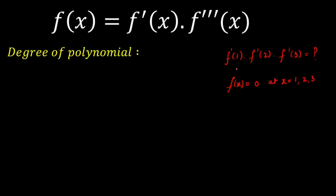Before calculating the product f'(1)·f'(2)·f'(3), I need to calculate the degree of the polynomial. Looking at f(x) = 0 at x = 1, 2, and 3, I can see the roots are 1, 2, and 3, but I cannot surely say the polynomial is cubic — the degree could be more than 3. So let's calculate the degree first.